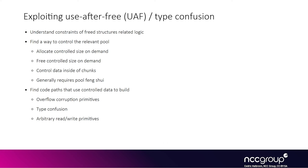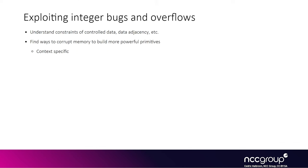Use-after-free is definitely the most common type of vulnerability you encounter in kernels these days, even on operating systems like Linux or macOS. There are also lots of integer overflows and other overflow-type bugs. They can be sometimes harder to exploit because of context-specific constraints — for example, sometimes the data you can use during the overflow is not fully controlled, or it is limited in size, so you can't actually overflow a lot of data.